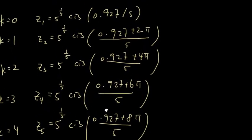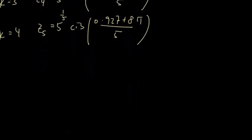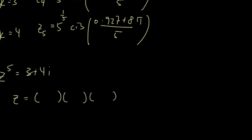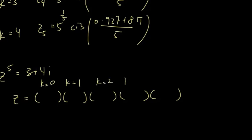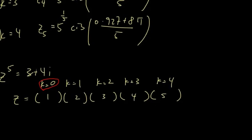So to recap: the question was z to the 5 equals 3 plus 4i, find the roots. I will have 5 roots — 1st, 2nd, 3rd, 4th, and 5th root. Each of these is obtained by iterating k from 0 to 4. Remember, k equals 0 still generates a root.